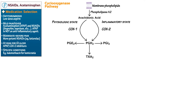Indicate that prostaglandin E2, prostacyclin, and thromboxane A2 are all products of the cyclooxygenase 1 pathway. On the cyclooxygenase 2 side, both prostaglandin E2 and prostacyclin are produced, but thromboxane A2 is not — and as we'll see, this has an important effect on thrombogenicity. Now let's learn some of the key effects of these biological mediators so we can understand the indications and risks of NSAIDs.